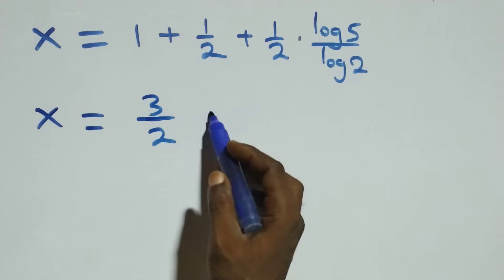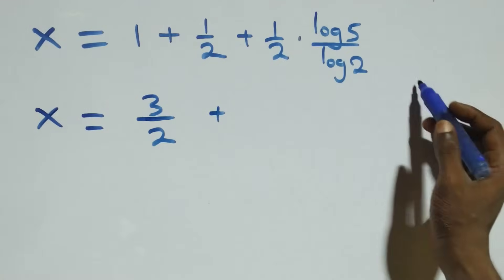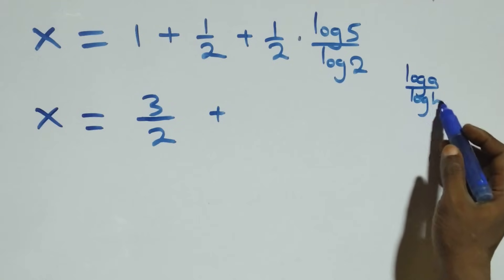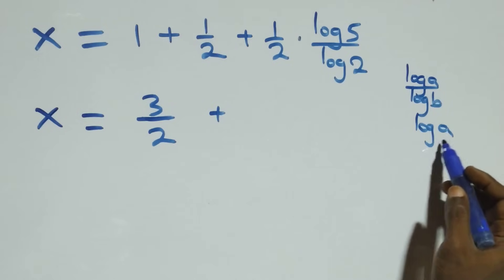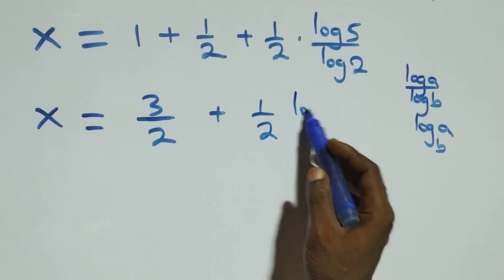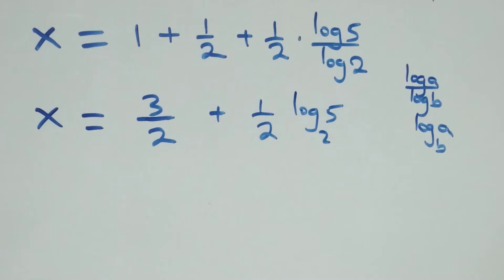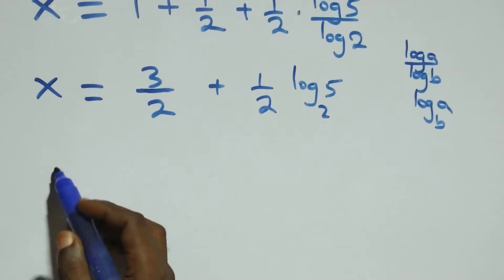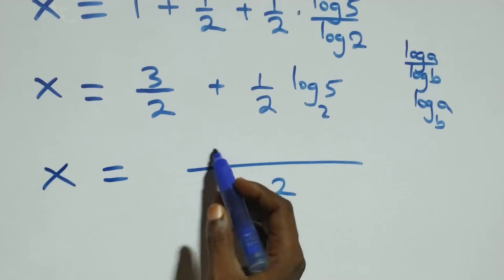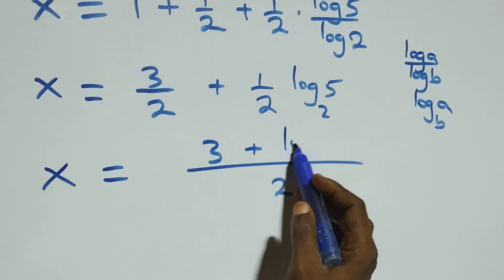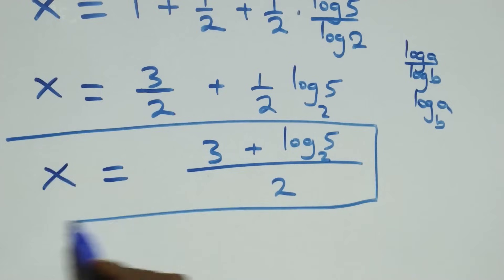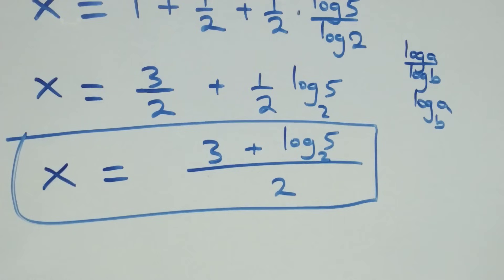We apply the change of base formula: log a over log b equals log a to base b. So we have x equals 1 plus one half, which is three over two, plus half times log 5 to base 2. Bringing this together as one fraction, the LCM is 2, giving x equals 3 plus log 5 base 2, all over 2.